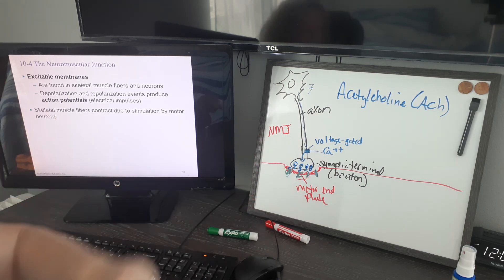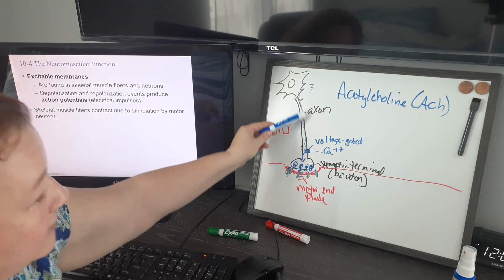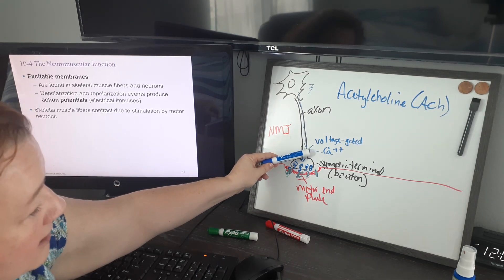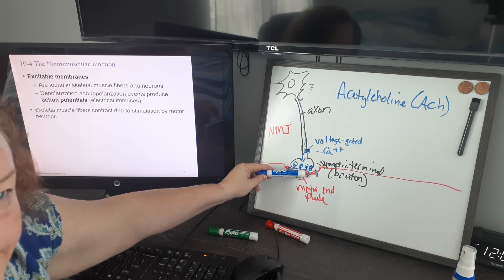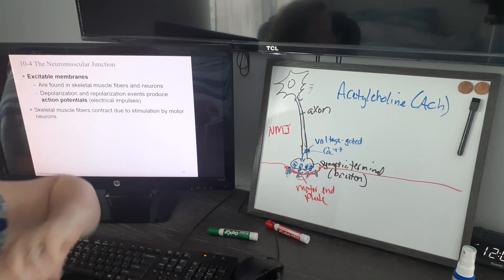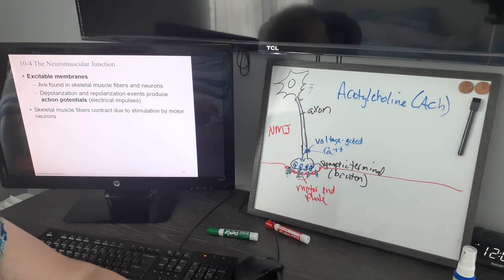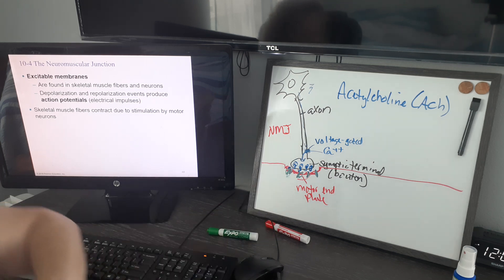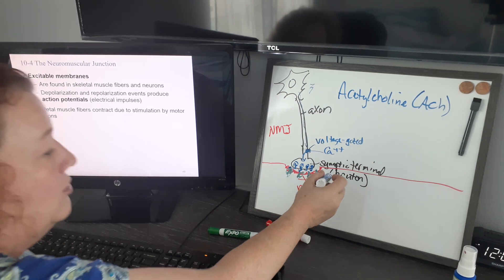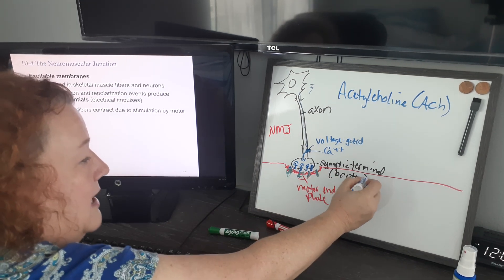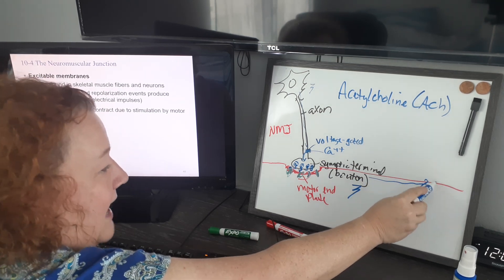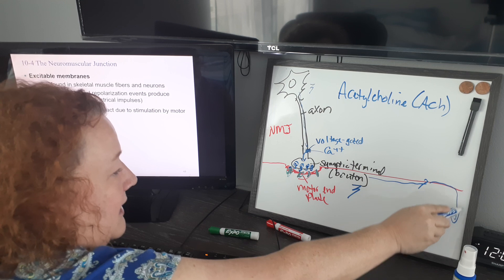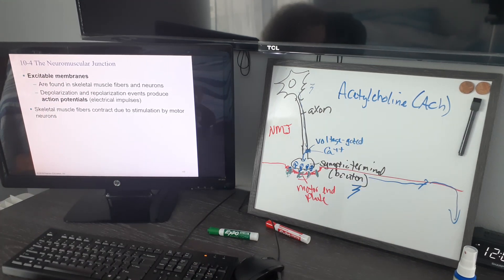In that process, we go from an electrical current to a very brief chemical signal that can cross the gap, and then create a new electrical current on the muscle cell side in the motor end plate. This new action potential is going to travel down the surface of the muscle cell, and anywhere there's a T-tubule, it's going to go down inside.